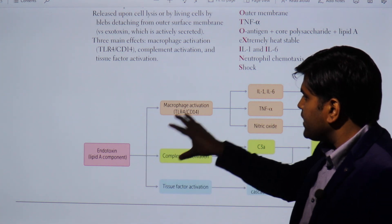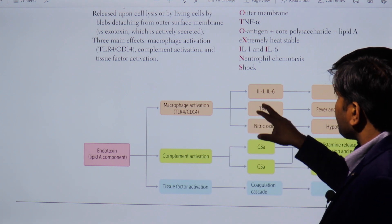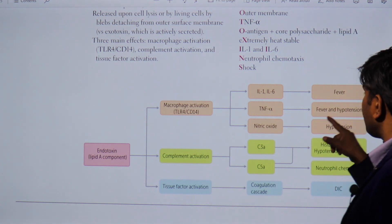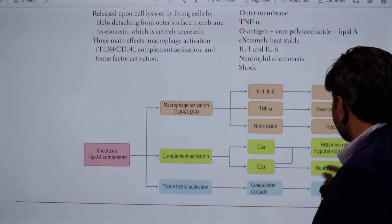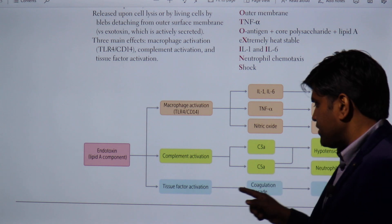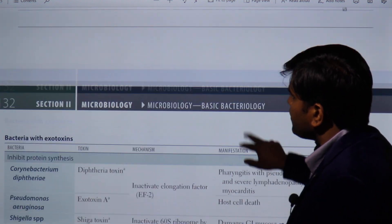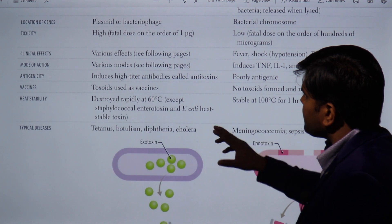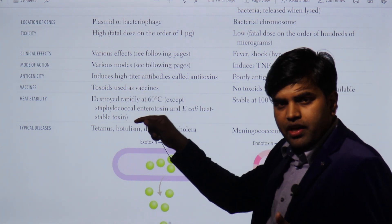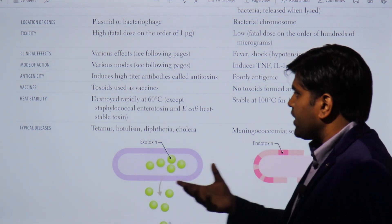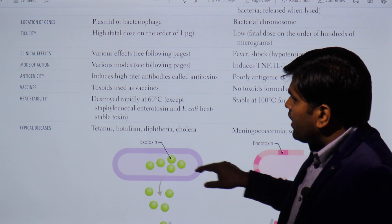Looking at the endotoxic mechanism: endotoxins activate macrophages, which release interleukin-1, interleukin-6, TNF, and nitric oxide — leading to fever and hypotension. Through the complement pathway, histamine release causes hypotension, edema, and neutrophil chemotaxis. Tissue factor activation leads to the coagulation cascade and DIC. The mode of action for exotoxins varies depending on the specific toxin, which we will discuss in detail later.